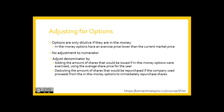There are no adjustments to the numerator because the numerator relates to net income, and when people exercise options — even paying cash to do so — cash does not impact net income. We adjust the denominator by adding the shares that would be issued if in-the-money options were exercised, using the average share price for the year.